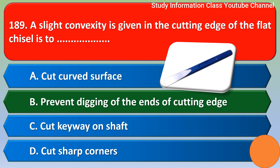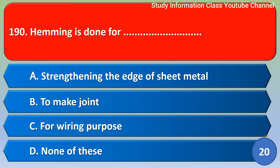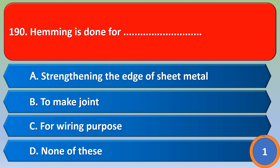Next question: hemming is done for option A strengthening the edge of sheet metal, option B to make a joint, option C for ring purpose, option D none of these. The correct answer is option A: strengthening the edge of sheet metal.